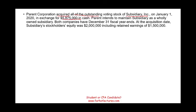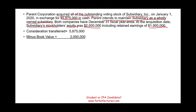Simply put, we gave them cash and got all the stock. Therefore, consideration transferred is $5,875,000. The parent intended to maintain the subsidiary as a wholly owned subsidiary, so they're going to keep two separate accounting records. Both companies have a December 31st fiscal year end. At the acquisition date, the subsidiary's stockholders' equity was $2,000,000, including $1,500,000 of retained earnings. So we paid $5,875,000 for something worth $2,000,000 on the books — therefore, we paid an excess of $3,875,000.